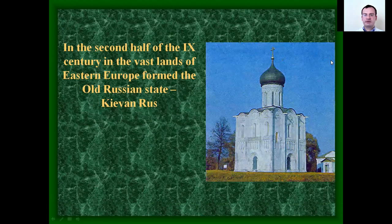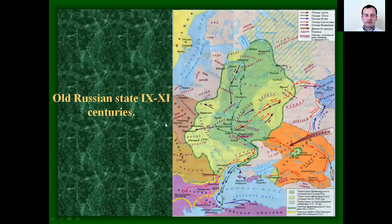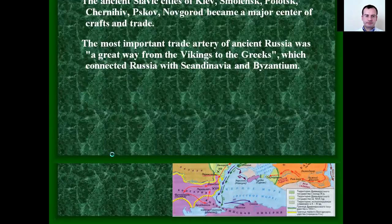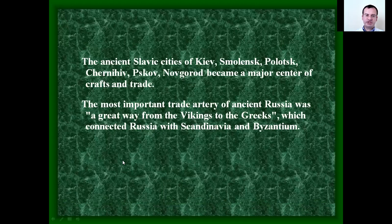In the second half of the 9th century, in the vast lands of Eastern Europe, the old Russian state Kievan Rus was formed. The ancient Slavic cities of Kyiv, Smolensk, Polotsk, Chernigov, Pskov, and Novgorod became major centers of craft and trade. The most important trade route of ancient Russia was the great way from the Vikings to the Greeks, which connected Russia with Scandinavia and Byzantium.